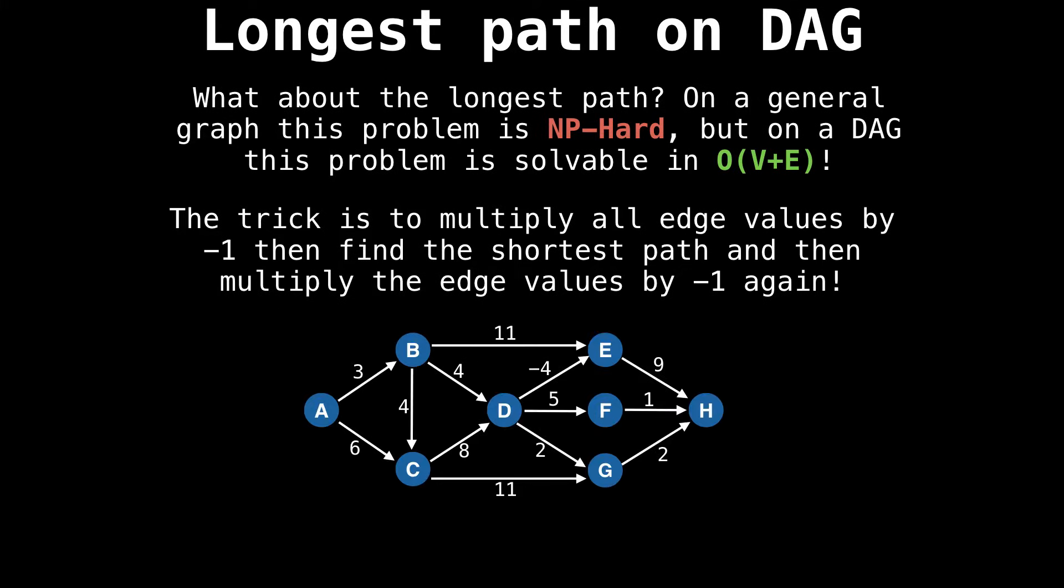Take the previous graph we had. To find the longest path, simply negate all the edges, then find the shortest path and multiply the answer by minus one. And there you go, that's all you need to do.